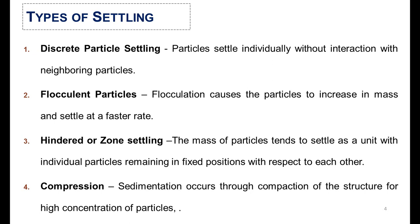The second type is flocculent particle settling, where flocculation causes the particles to increase in mass and settle at a faster rate. Third is hindered or zone settling, where the mass of particles tends to settle in a specific zone at an increased settling rate. Fourth is compression settling, which sometimes occurs through compaction for particles that are very fine and have a high concentration.